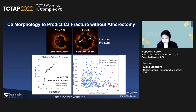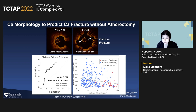In a cohort treated by balloon and stent only, except for one case, none had calcium fracture if the calcium thickness was more than 0.5 mm. Whenever you start seeing thick calcium, you should expect: I cannot make the calcium fracture with just balloon and stent — we have to do more.